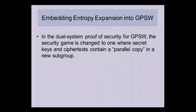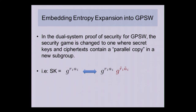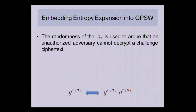In the dual system proof of security for GPSW, we change the security game so that secret keys and ciphertexts contain a parallel copy of themselves in a new subgroup. The secret key and ciphertext in the simplified version all have elements g^(r_i · a_i) where r_i is per attribute. The first step in the security proof is to switch to a version with an extra subgroup element g^(r̃_i · ã_i) added to the secret keys, where r̃_i and ã_i are independent and random. Crucially, these ã_i are not tied to the public parameters the way the a_i are. The randomness of these untethered ã_i is then used in an information-theoretic sub-argument to show that an unauthorized adversary can't decrypt the challenge ciphertext.